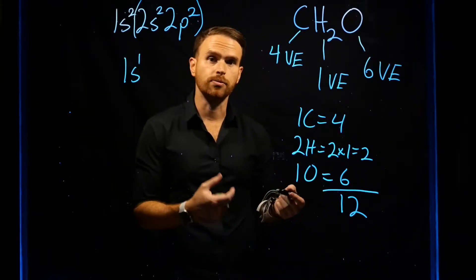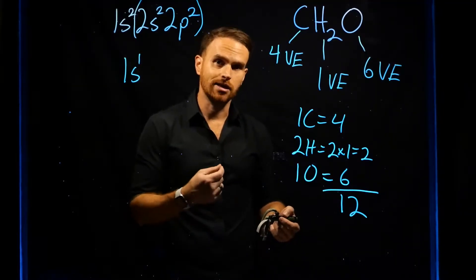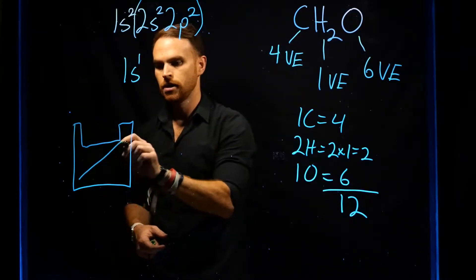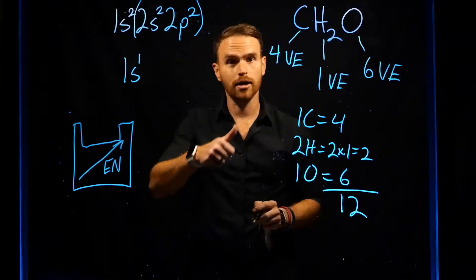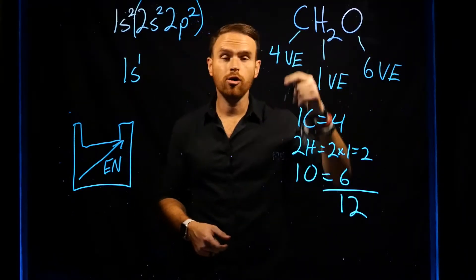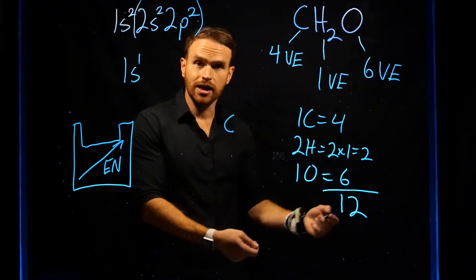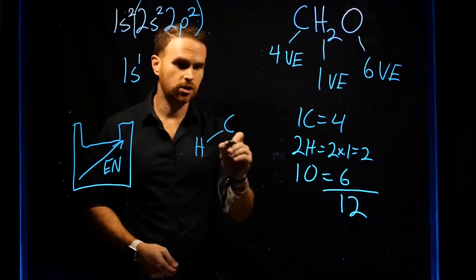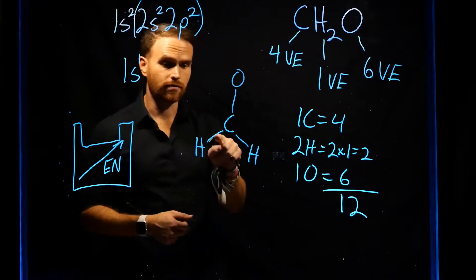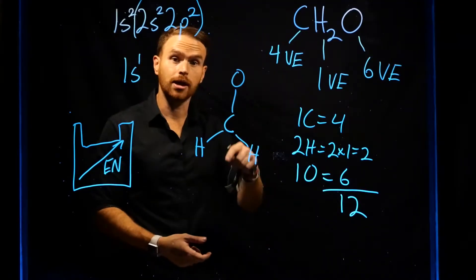The next step to creating Lewis structures is to place the least electronegative atom in the center of the molecule. Keep in mind that you never place hydrogen at the center. If you remember the periodic trends for electronegativity, it increases as you go up and to the right on the periodic table — this is why fluorine is the most electronegative atom, followed by oxygen. So carbon is our least electronegative atom and goes in the center. From there, you draw your skeletal structure with a single bond to each of the outer atoms. Each bond indicates that two electrons have been used, so we've used six of our twelve, leaving six more to populate the Lewis structure.